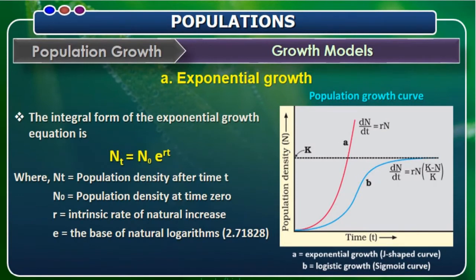The integral form of the exponential growth equation is: Nt = N0 × e^(Rt), where Nt is the population density after time t, N0 is the population density at time zero, R is the intrinsic rate of natural increase, and e is the base of the natural logarithm, which equals 2.71828. Using this formula, we can calculate the population density after a given time period.